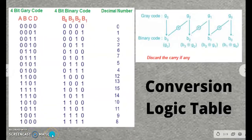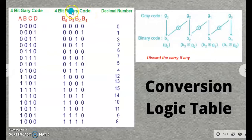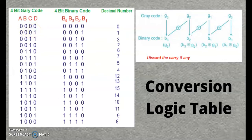This is the first step where we need to design a conversion logic table. On the left-hand side, 4-bit gray code is the input whereas 4-bit binary code is the output. All numbers from 0 to 15 are written. These are the binary equivalent and this is the gray equivalent for it. We will first see how to convert any gray code to binary code and will later come to the values in the table.